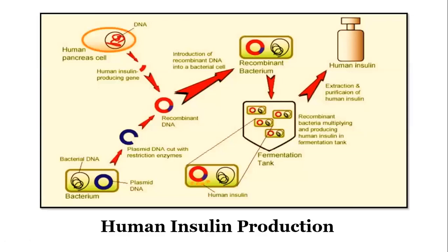Human insulin comprises two polypeptide chains — chain A and chain B. When insulin is genetically engineered, the genes for these chains are inserted into plasmid vectors of E. coli. Recombinant DNA is formed and this recombinant bacteria is allowed to multiply in a suitable nutrient media. The A and B insulin chains are then extracted, purified, and combined through disulfide bonds.